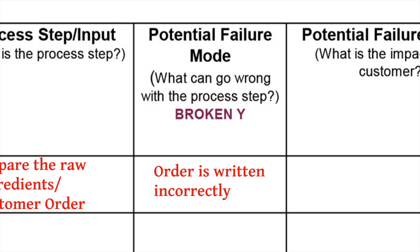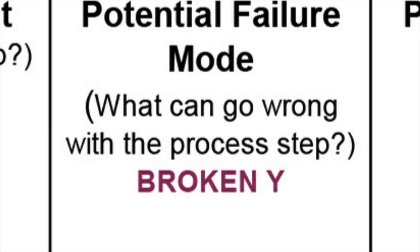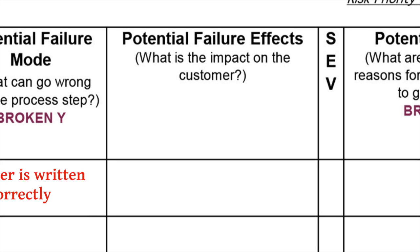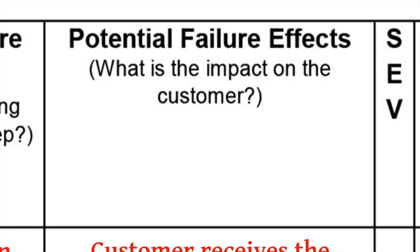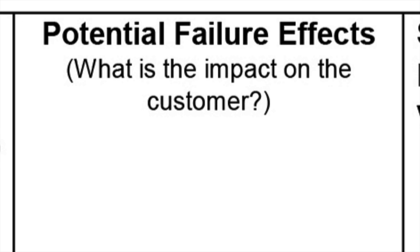The question to ask here is: what can go wrong at this step? For the third step, you move to the next column of potential failure effects. Here you'll document the effect that a particular failure mode can have on the process, especially as perceived by the customer or user. For our example, a potential failure effect for the first process step and input is: customer receives the wrong meal. It's helpful to ask: what is the impact on the customer?